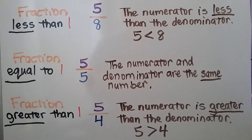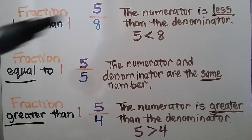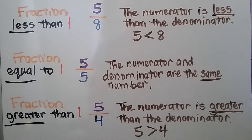For a fraction that is less than one, like five-eighths, the numerator is less than the denominator. Five is less than eight.